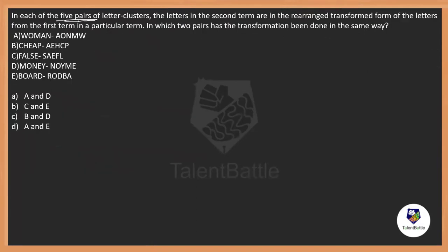In each of the five pairs of letter clusters, the letters in the second term are rearranged or transformed from the letters in the first term, in a particular pattern. In two pairs, the transformation has been done in the same order. You can see there are five pairs that are given. There is some arrangement that happened. We need to identify in which of the pairs, the arrangement happened in the same manner.